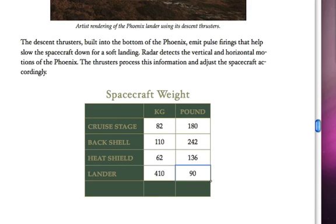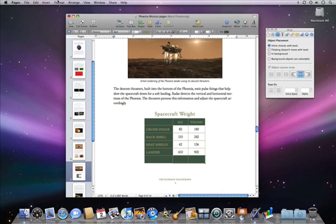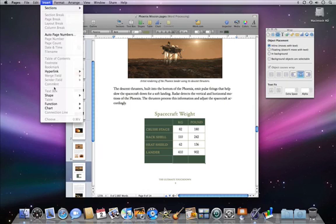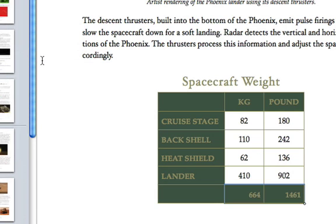After your data is entered, you can have your tables perform automatic calculations for you using a formula. To make these bottom cells display the total of all the numbers in their respective columns, hold down the Shift key to select both of the target cells, and then choose Insert, Function, and then Sum. The total of all the numbers will then appear in the cells you selected.